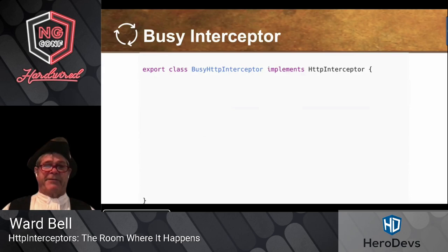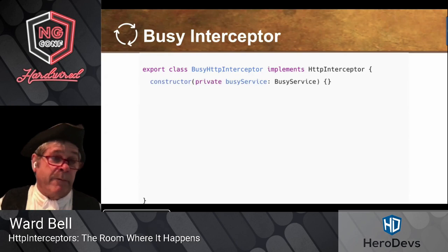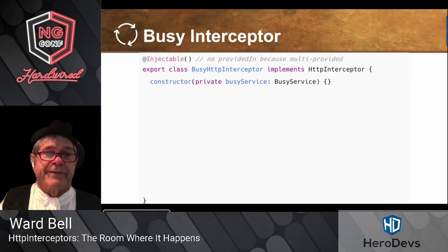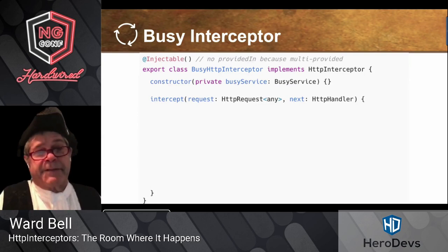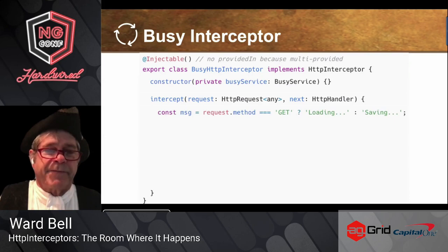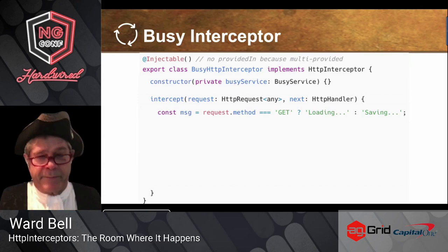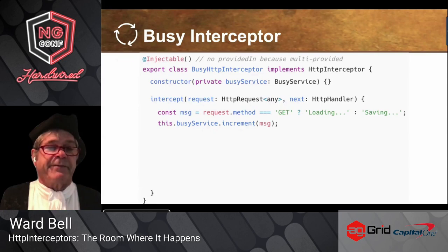The interceptor starts as a class implementing HttpInterceptor, and you put the service you want to inject in the constructor — it gets injected. Note there's no providedIn: 'root' — remember you can't do that. Here is the intercept method, which is the shell they all share. We figure out what message to show: if the request is a GET we show loading, otherwise we assume it's saving. On the request side, we call the busy service increment and the spinner comes up.